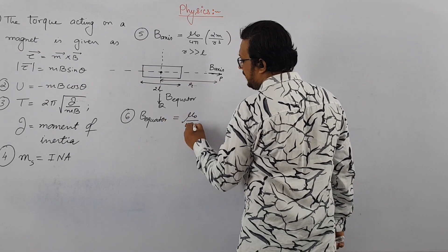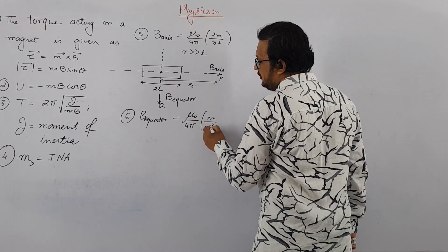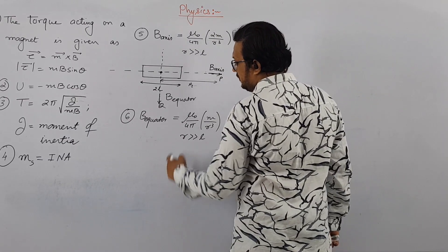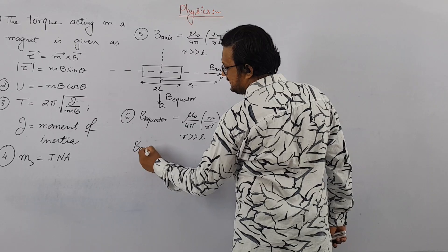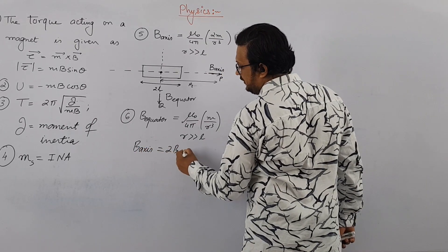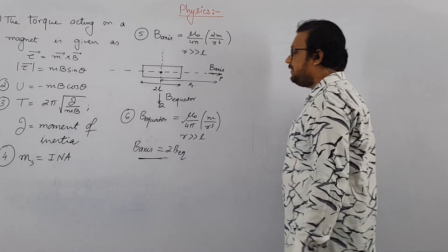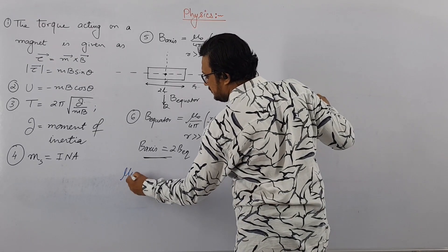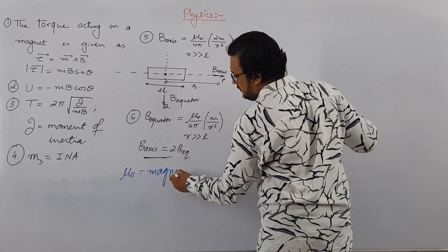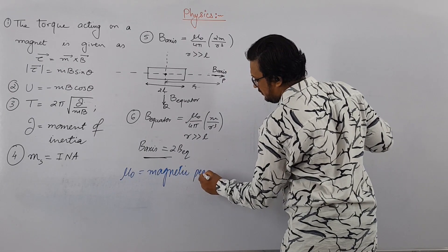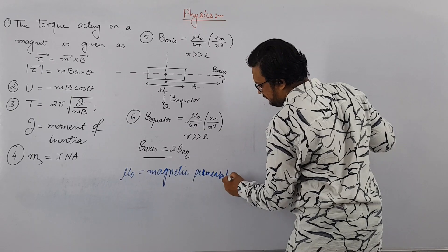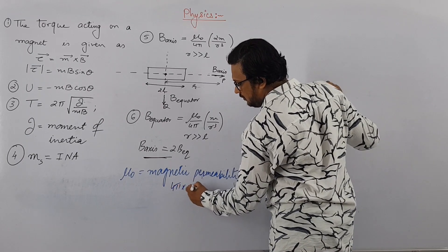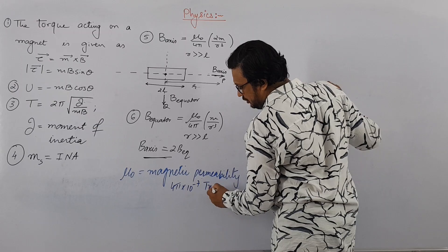Here mu_0 is known as magnetic permeability, and B_axis is 2 times B_equator. The value of mu_0 is 4 pi into 10 to the power minus 7, with unit tesla meter per ampere.